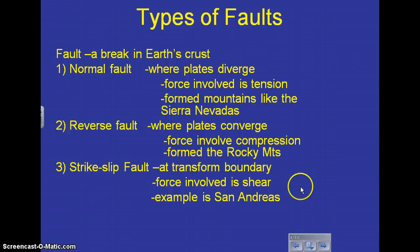Strike-slip faults are at transform boundaries, and that is when the plates are sliding past each other. They call that a shear force. An example of that would be a place like the San Andreas Fault in California. Remember, with strike-slip faults, they are just sliding past each other, so there is no vertical motion with that kind of fault.